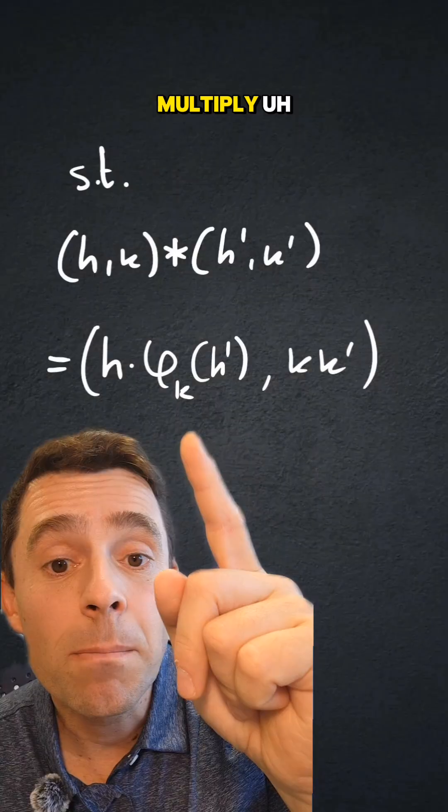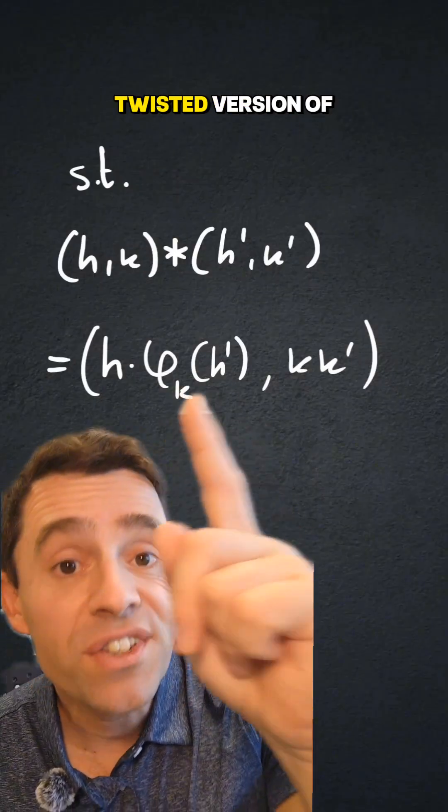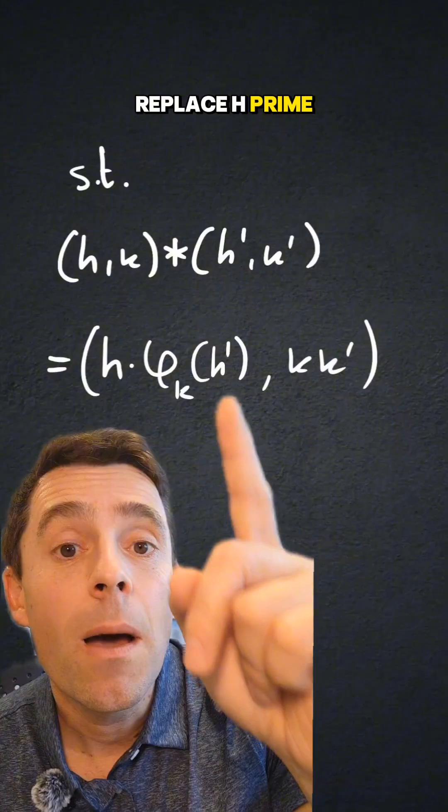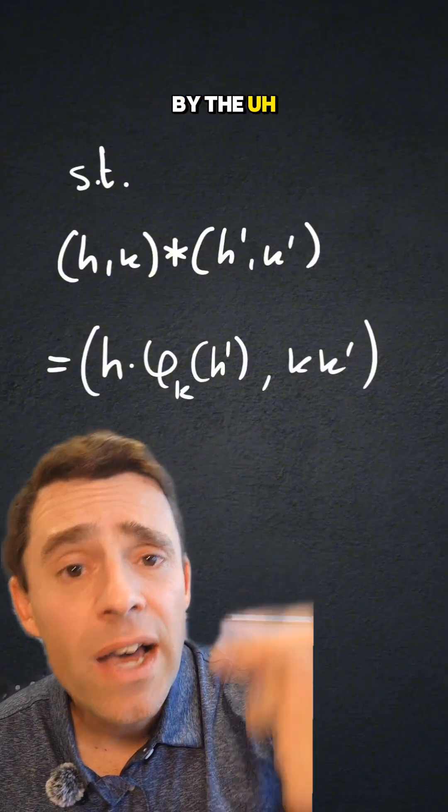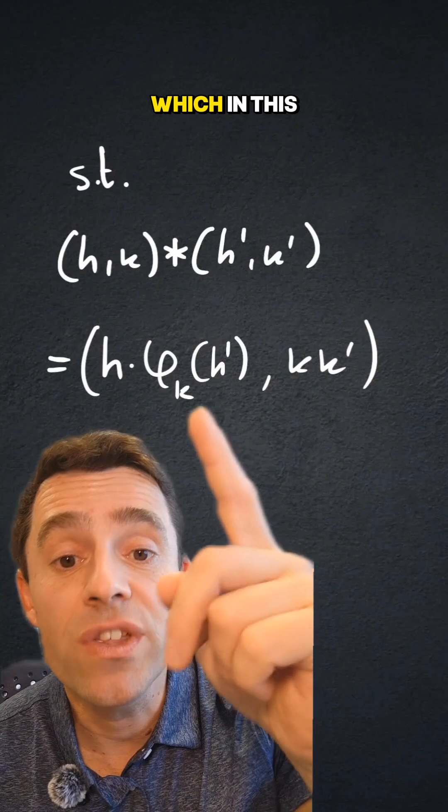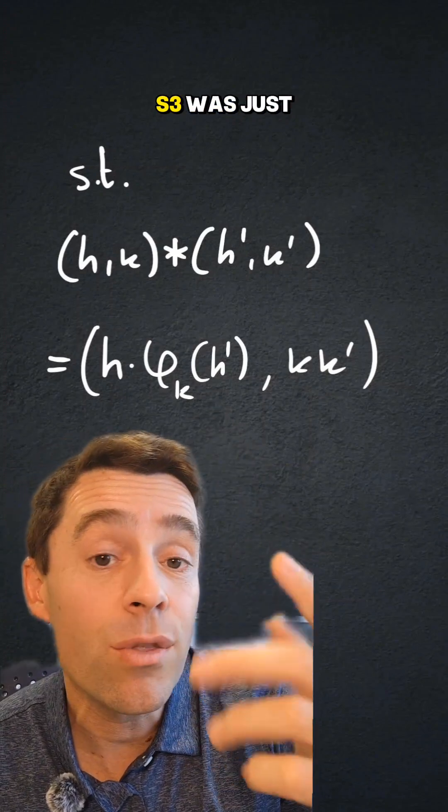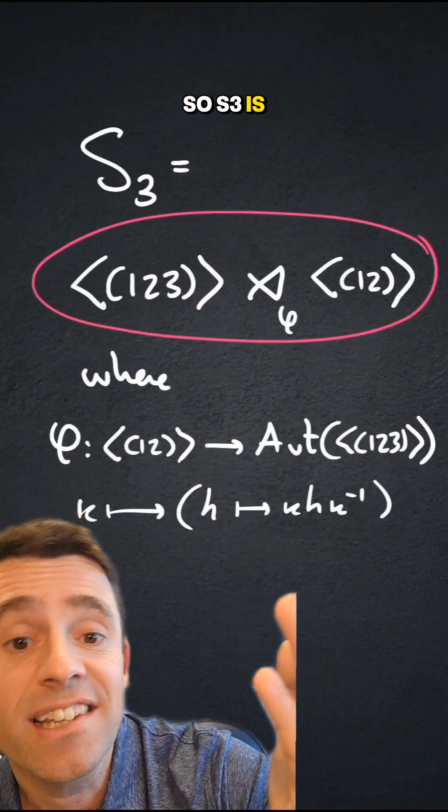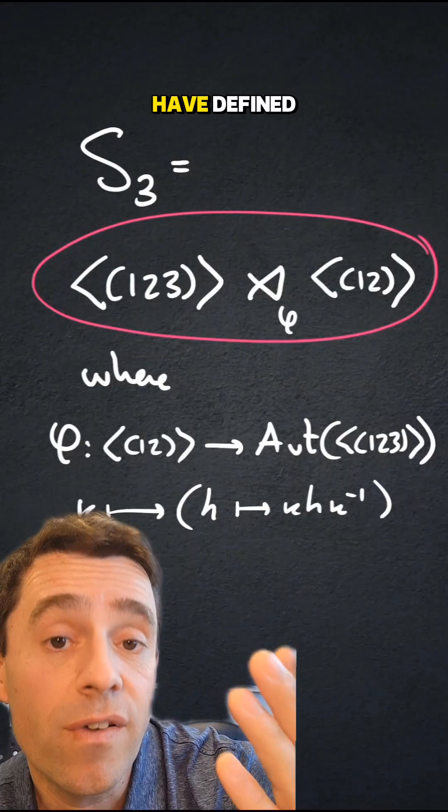and the h's multiply, but with a twisted version of h'. So that we replace h' by the effect that an automorphism has on h', which in this case, in the case of s3, was just conjugation. And like so, s3 is a semi-direct product like we have defined.